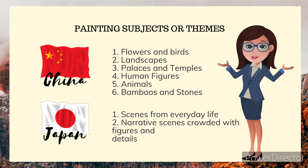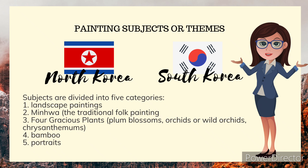Japan's painting subjects or themes include scenes from everyday life and narrative scenes crowded with figures and details. Korean painting subjects or themes are divided into five categories: 1) landscape paintings, 2) Minhwa — the traditional folk painting, 3) gracious plants such as plum blossoms, orchids, and chrysanthemums, 4) bamboo, and 5) portraits.